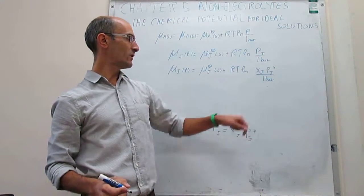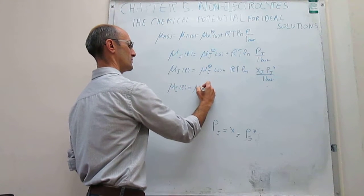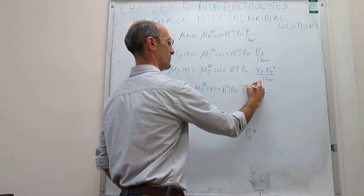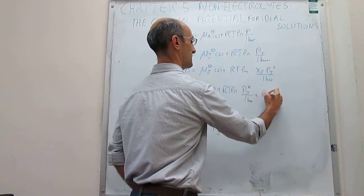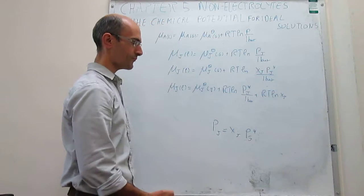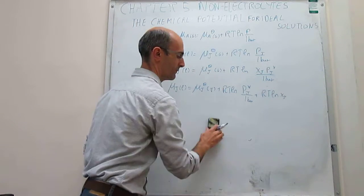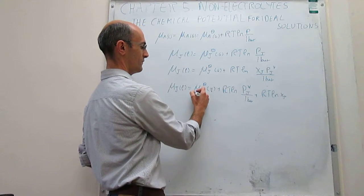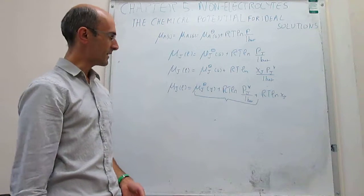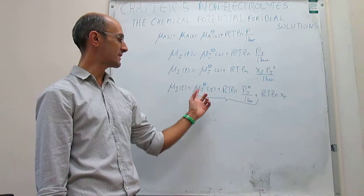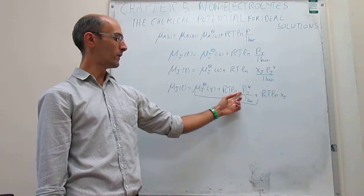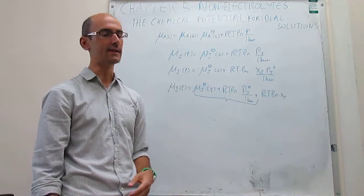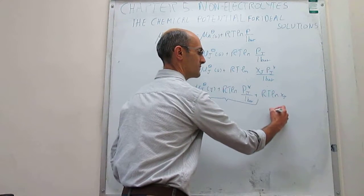We split the natural log into two terms: μ(J,liquid) = μ°(J,gas) + RT·ln(P*_J / 1 bar) + RT·ln(X_J). The first two terms look like a constant — the chemical potential of the gas at one bar plus the vapor pressure of the pure liquid at one bar. To understand what that combined constant represents, we set X_J equal to one, meaning we only have J. The natural log term then goes to zero and disappears, so those first two terms must equal the chemical potential of pure J in the liquid.